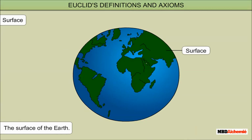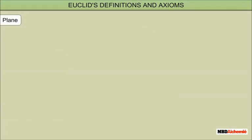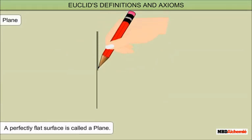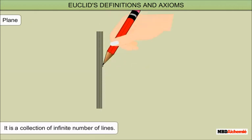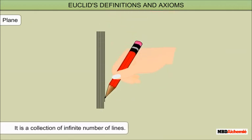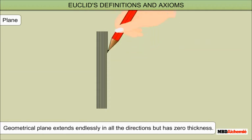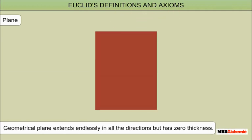Plane: A perfectly flat surface is called a plane. It is a collection of infinite number of lines. Geometrical plane extends endlessly in all directions, but has zero thickness.